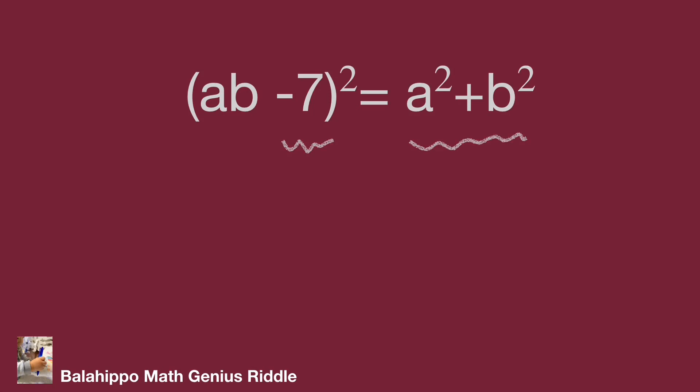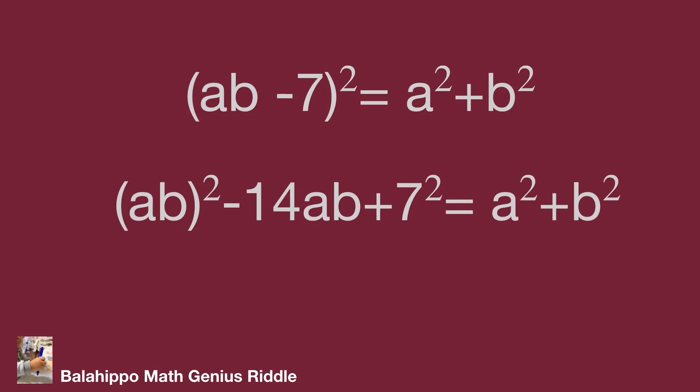Firstly, develop (ab - 7)² to become (ab)² - 14ab + 49 = a² + b².